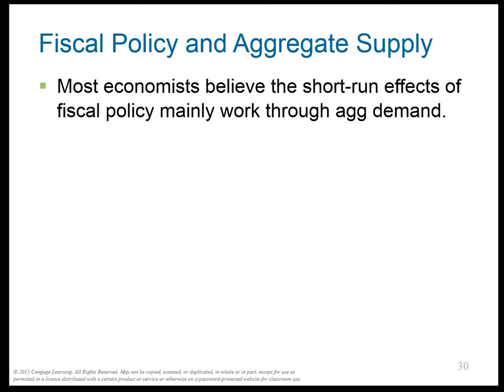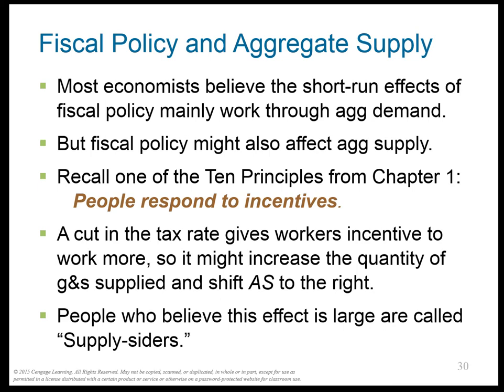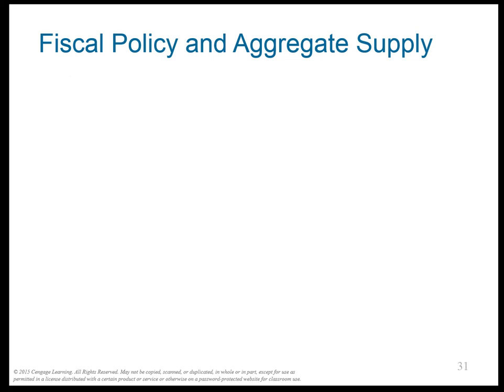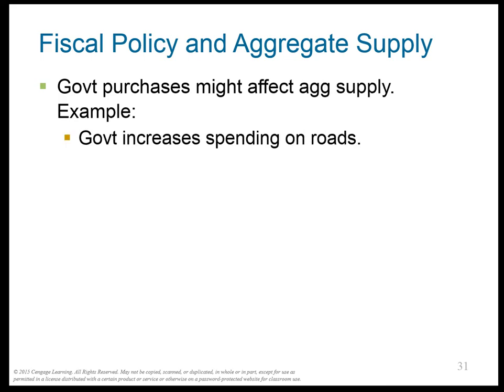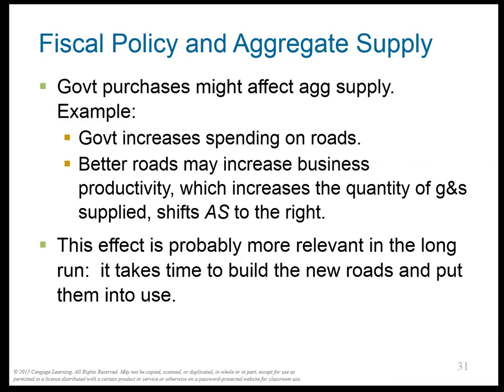We also have effects of fiscal policy on aggregate supply. Because people respond to incentives, if taxes are cut, workers may work more, which shifts the AS curve to the right — shifting aggregate supply because the AS curve represents producers and firms. People who believe this effect is large are called supply-siders. Government purchases can also affect aggregate supply: if the government spends $40 billion building roads, businesses become more productive — they can ship goods between each other more efficiently — increasing the quantity of goods and services and shifting the AS curve to the right. This probably happens mainly in the long run, because it takes time to build roads and put them into use.